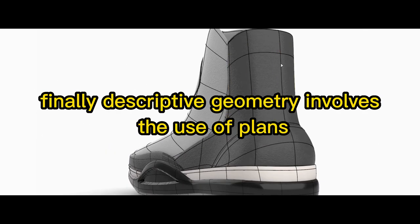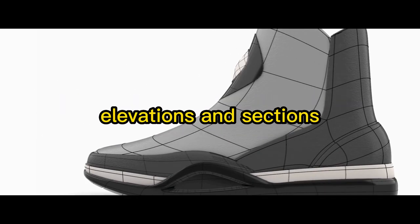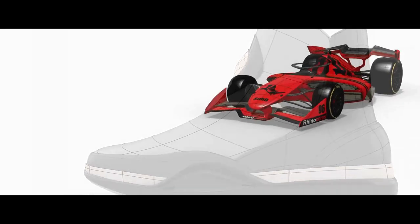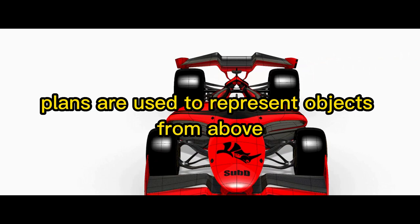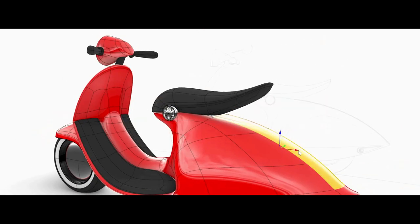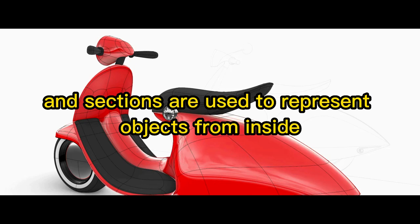Finally, descriptive geometry involves the use of plans, elevations, and sections, which are used to represent objects in 2D. Plans are used to represent objects from above, elevations are used to represent objects from the side, and sections are used to represent objects from inside.